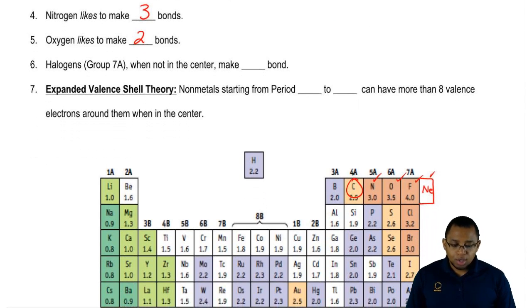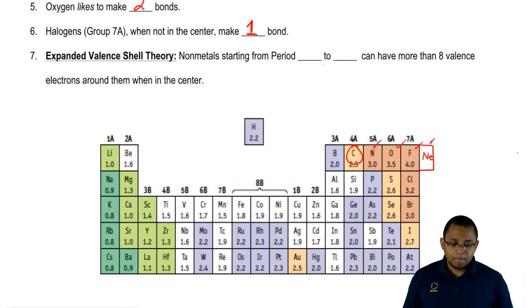Then we're going to say halogens, the group 7A elements, when they are not in the center, when they're not in the center of our Lewis dot structure, they only make one bond. And remember, fluorine can never go in the center. But the other halogens—bromine, chlorine, and iodine—we could put them in the center.